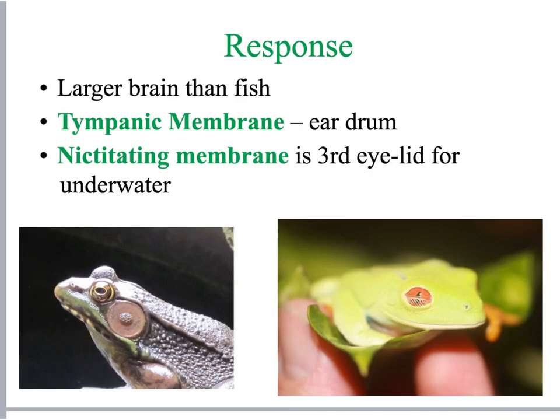Frogs use their brain and nervous system to respond to their environment. Their brains are larger than the fish's. They have a tympanic membrane, which functions like an eardrum, just as in us. They also have a nictating membrane, which allows them to survive in the aquatic environment by protecting their eyelid — similar to what we had as embryos to protect our eyes — allowing the frog to see underwater.